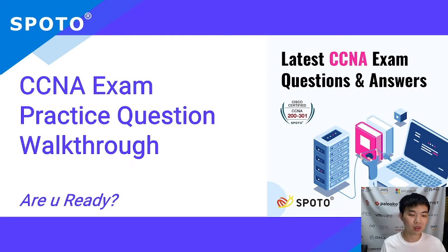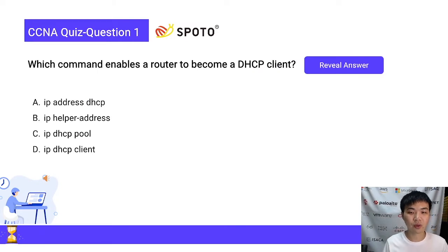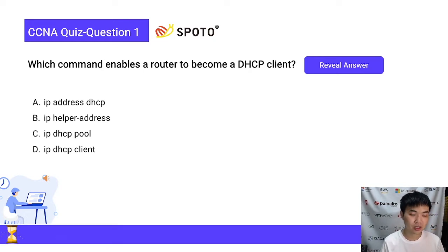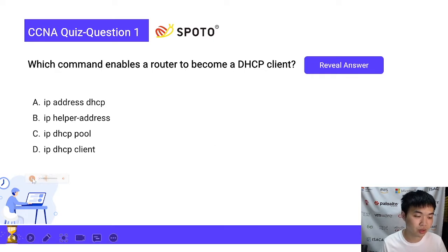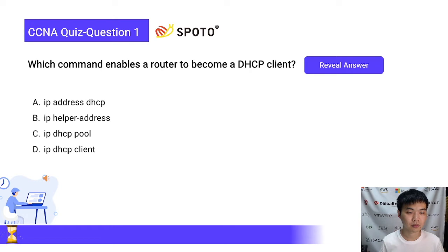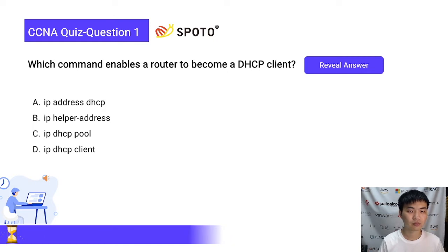Before we get started, let's go through the questions one by one. The first question: Which command enables a router to become a DHCP client? A. IP address DHCP. B. IP helper address. C. IP DHCP Google. D. IP DHCP client. Now we get 30 seconds to answer it.